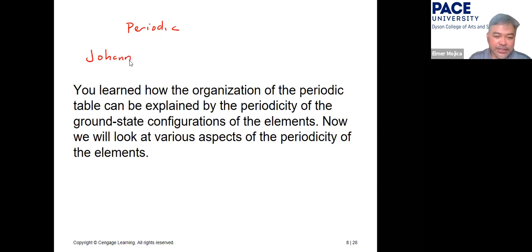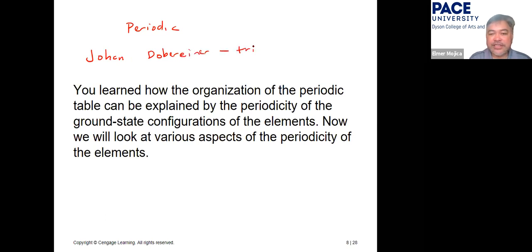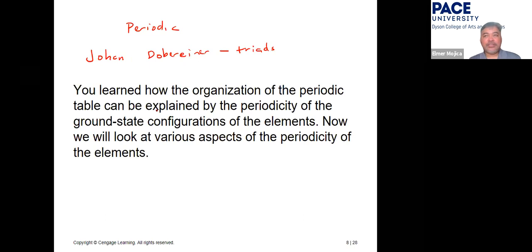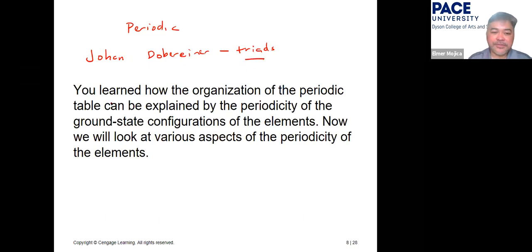Johann Döbereiner noticed that some elements exhibit similar properties in groups of three called triads. He found that the average of the lowest and highest molar mass in a triad equals the molar mass of the middle element — a group of three elements with the same properties.